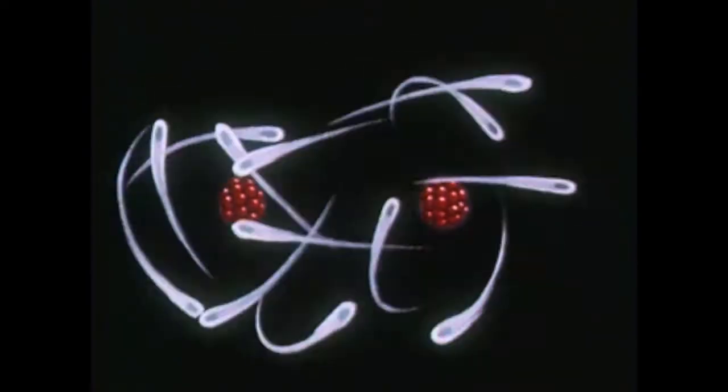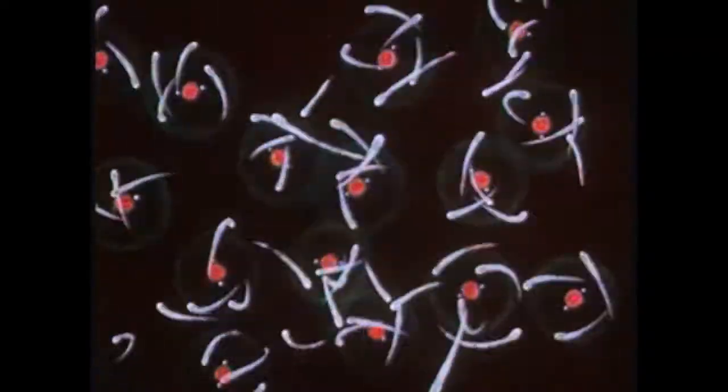To explain how this works, let's review the action of the atoms and their electrons in a piece of metal where we saw swarms of electrons moving freely in all directions about the atoms. Substances in which this takes place are good conductors of electricity.